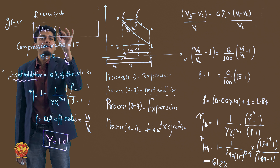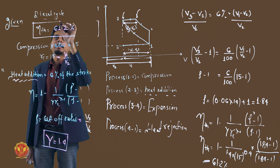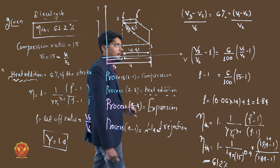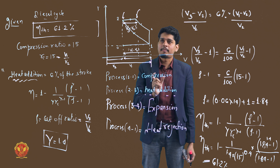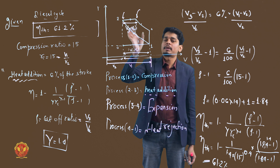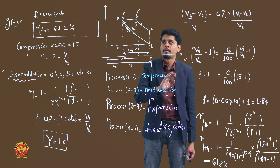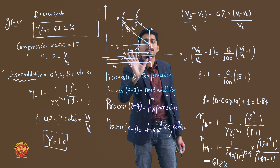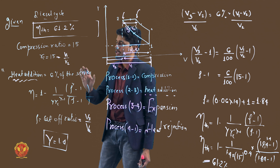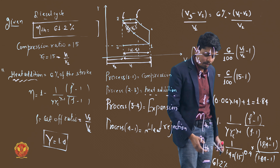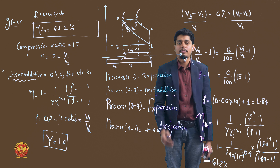So the answer is 61.2%. It was a simple but slightly tricky question. The tricky part was interpreting the statement that heat addition occurs over 6% of the stroke — meaning the 2 to 3 line is 6% of the total stroke. Using that, we calculated the cutoff ratio, then applied the efficiency formula with the compression ratio to get 61.2%. That's all for today's class. We'll see new diesel cycle questions in the next class. Thank you.